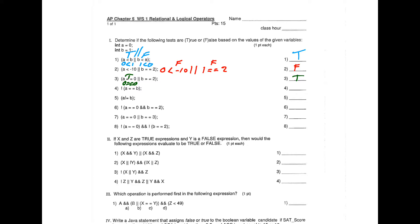Number four: a equals equals b, so that's 0 equals equals 1, which is a false statement. But NOT false — the opposite of false — is true. And a not equal to b evaluates as 0 not equal to 1, which is also a true statement.